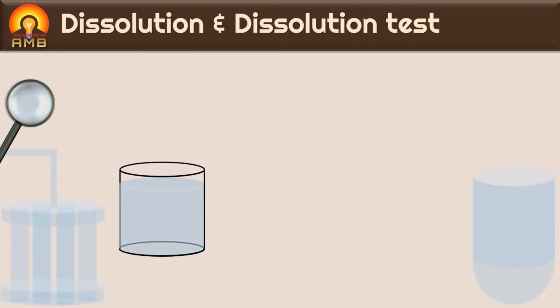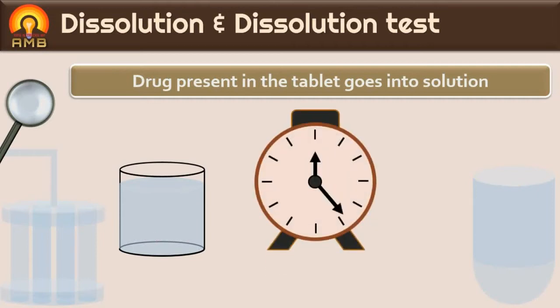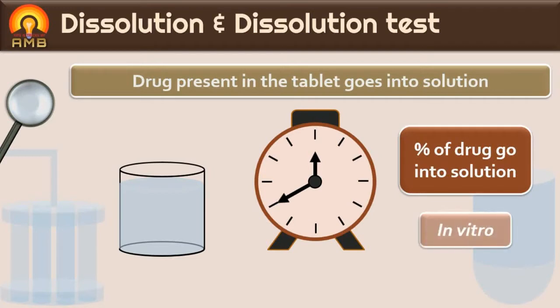In this presentation, we are going to discuss one of the official evaluation tests of tablets, i.e. dissolution tests. Dissolution means drug present in the tablet goes into the solution. So, going of drug from tablet into the solution is nothing but dissolution. Dissolution test is done to measure the time required for a given percentage of drug in the tablet to go into the solution under specified conditions in vitro.